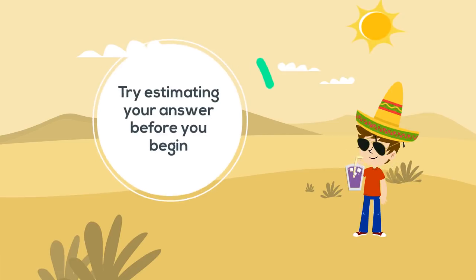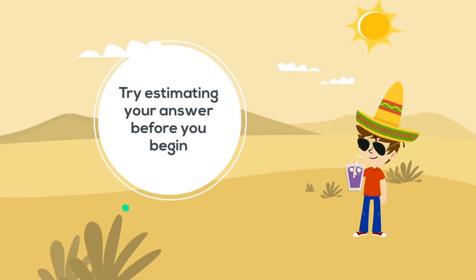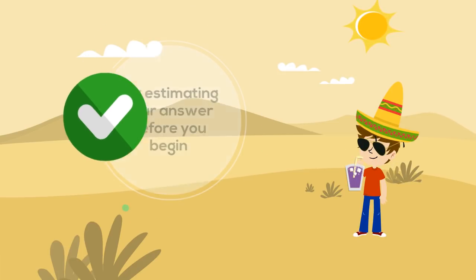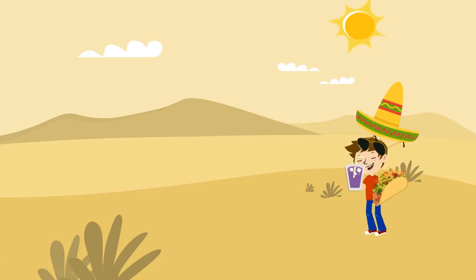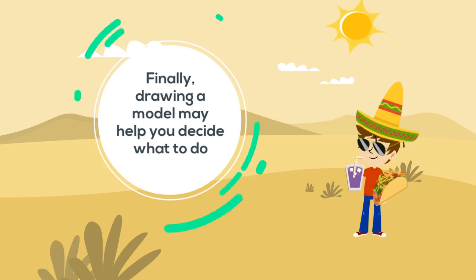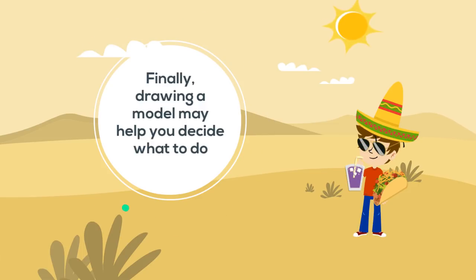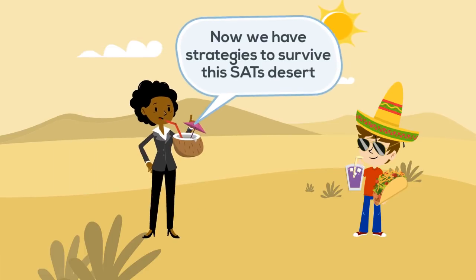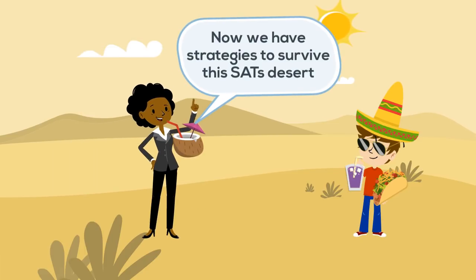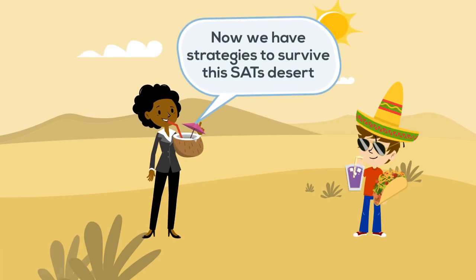Try estimating your answer before you begin, so when you look back you can be more sure if your answer is correct or if you made a mistake. Finally, drawing a model may help you decide what to do — a bar model is an excellent way to understand the problem. Now we have strategies to survive this SATs desert.